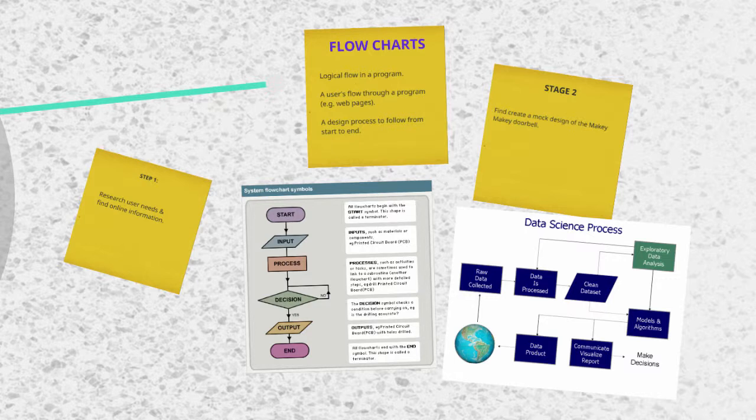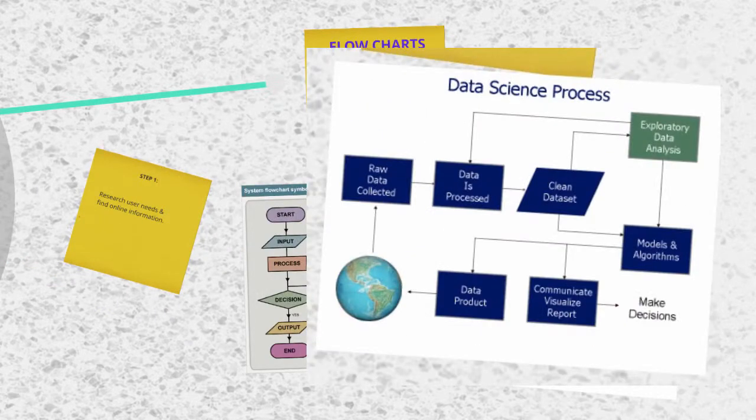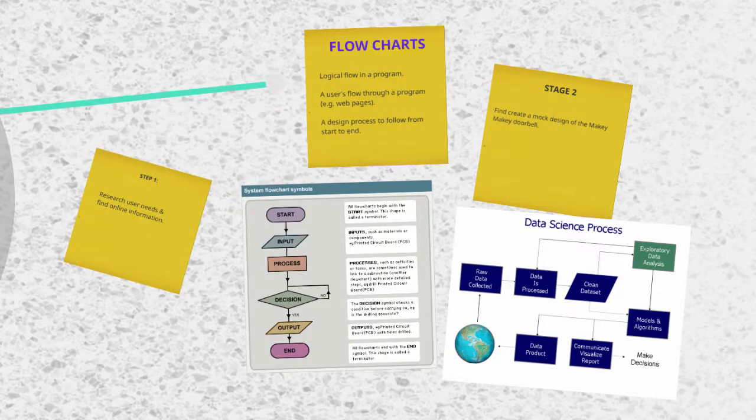Another use for flowcharts, besides figuring out code instructions, is that it can be used to design a method for planning projects. For example, in this image to the right, we have a flowchart for the processes involved in a data science project. The flowchart describes a logical process from data collection to the communication of results that inform decisions. Flowcharts are a great way for students to design their product ideas. This is a particularly useful approach where decisions and loops can be quite easily identified.